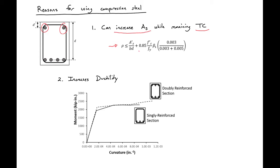The expression on the right is our tension-controlled reinforcement ratio limit for a regular rectangular section. Adding compression steel — if that compression steel yields — allows us to increase the amount of reinforcement that we can provide. This additional component is an additional amount of reinforcement that we can add to our section and still remain tension controlled.